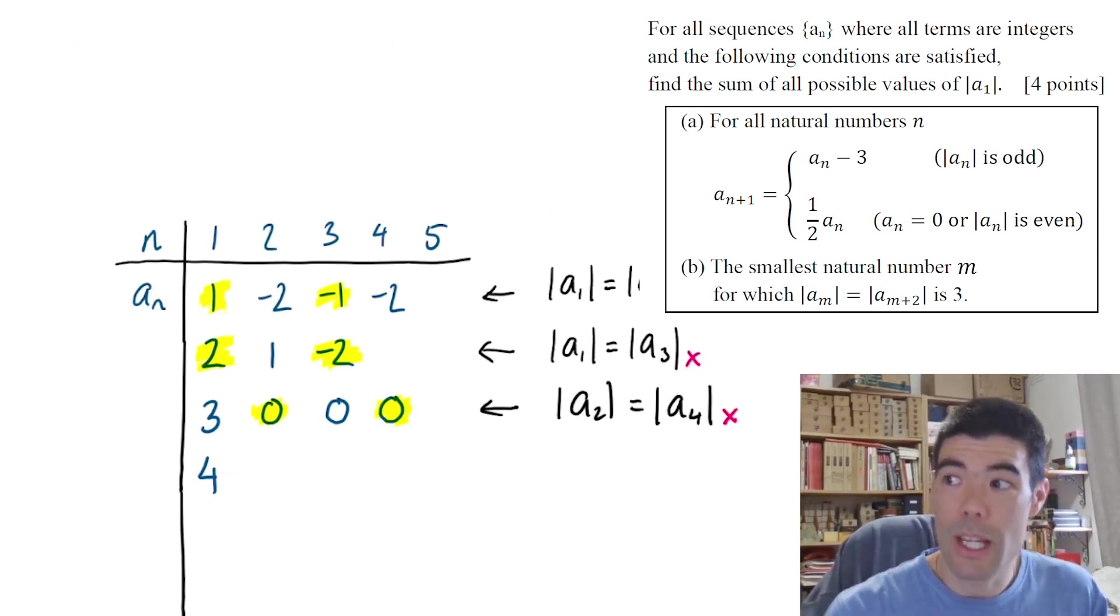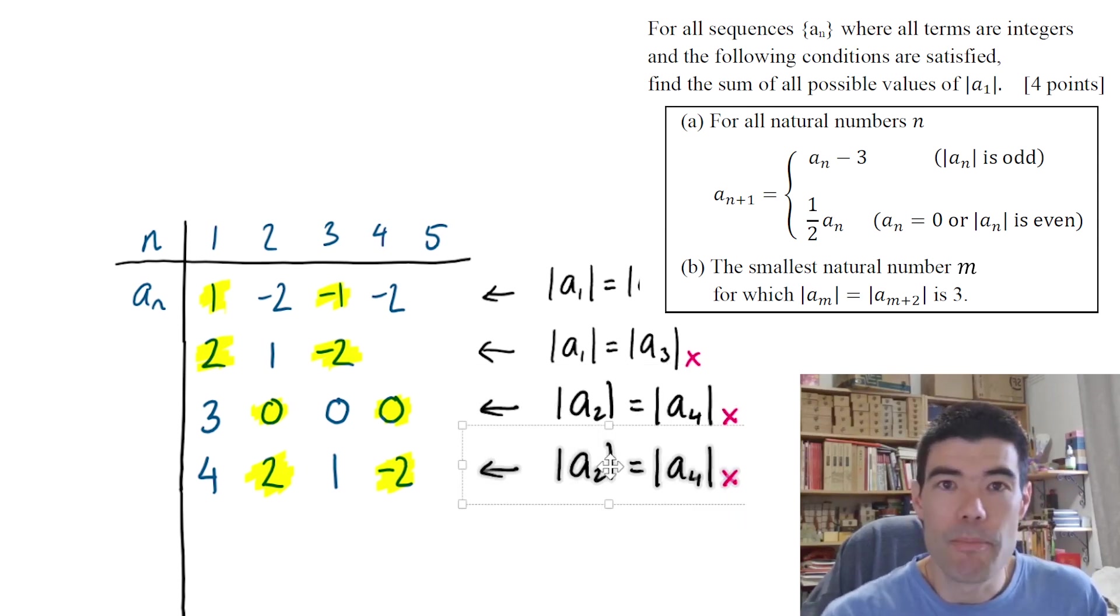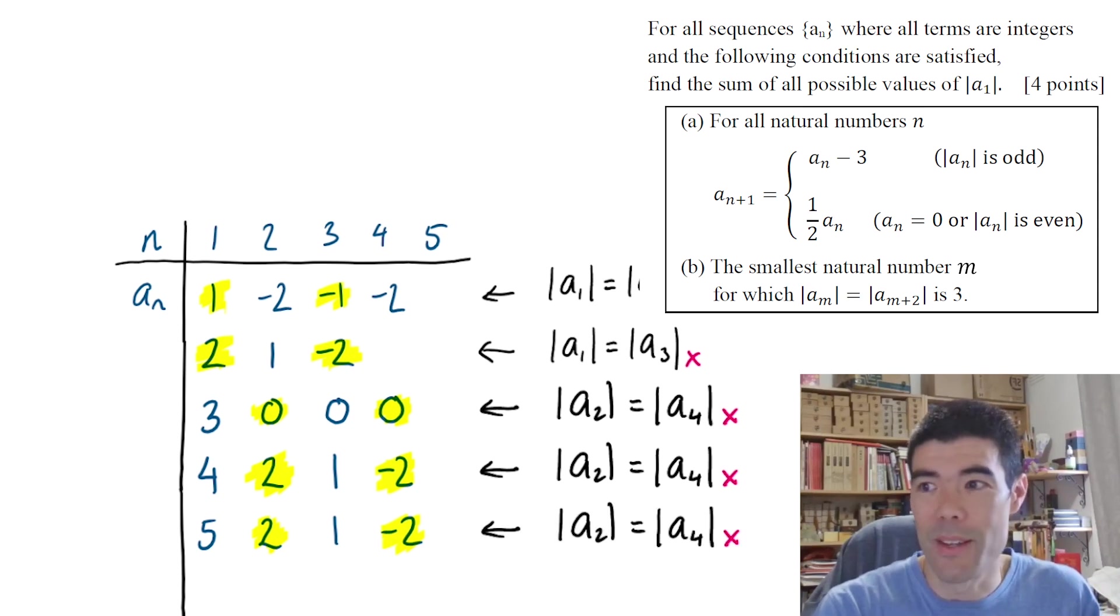Let's go for 4, divide by 2 to get 2, divide by 2 to get 1, subtract 3 to get negative 2. So we've seen this pattern 2, 1, negative 2 before. But again, we can't have a_2 and a_4 being equal in absolute value. So 4 is no good. The sequence fails. If we look at 5, subtract 3 to get 2. Again, we're going to get this 2, 1, negative 2. So it fails again.